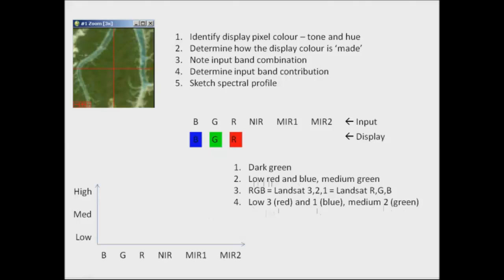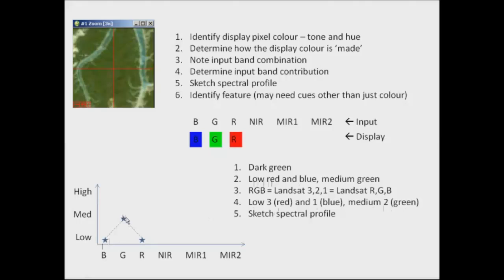The next step is to sketch a spectral profile based on the three bands that we have information for — low values in the blue and the red and a medium value in the green. The final step is to identify what that feature might be, using the spectral profile and other contextual cues. It's a green feature which may indicate vegetation in a standard blue, green and red colour composite, and it's also near a water buoy. So I'm going to say it's healthy vegetation — in fact it may even be some mangroves, and I know that also from contextual information from the larger area.